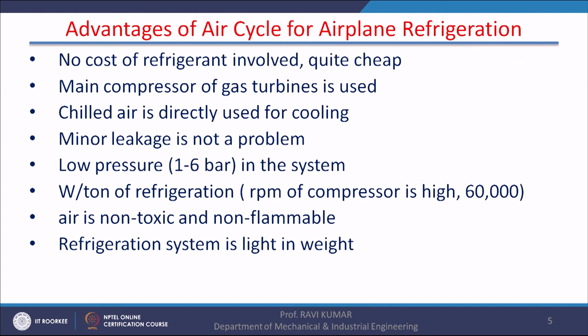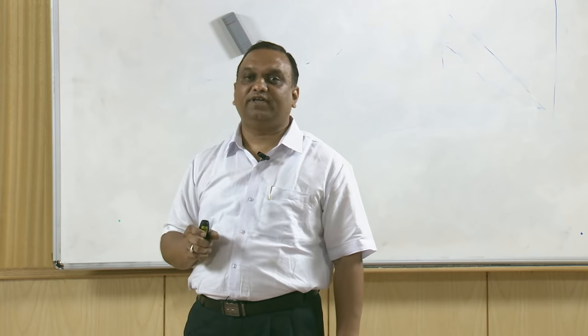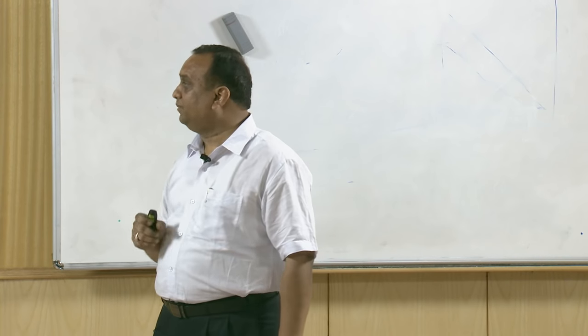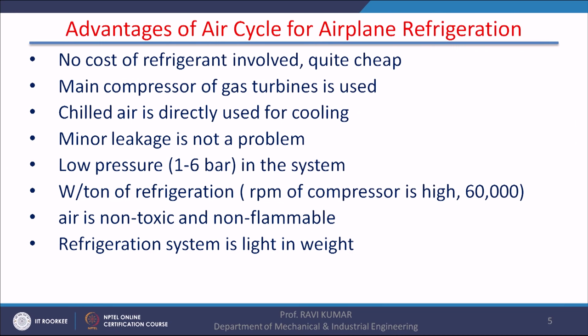Low pressure in the system leads to low maintenance, as discussed earlier. Weight per ton of refrigeration is low in the air refrigeration cycle — it is very light in weight, which is one of the major criteria for any aircraft application. The RPM of the compressor is very high — it can go up to 60,000 RPM. Air is non-toxic and non-flammable, and the refrigeration system is light in weight.